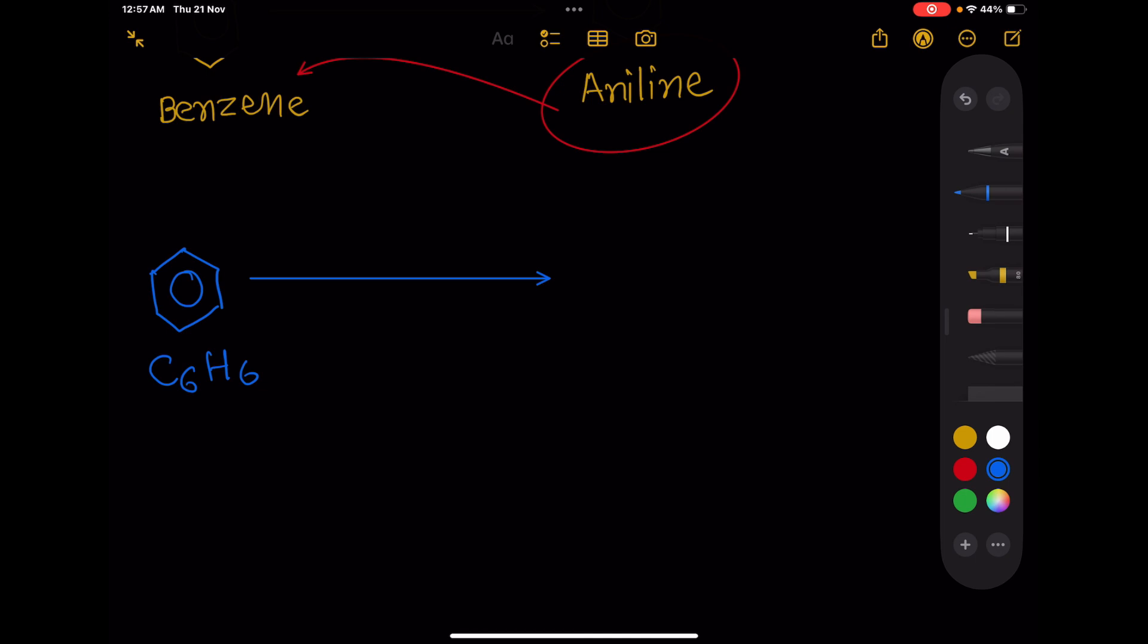Nitration of benzene gives nitrobenzene in the presence of concentrated HNO3 and concentrated H2SO4. We can see one hydrogen is replaced by an NO2 group.